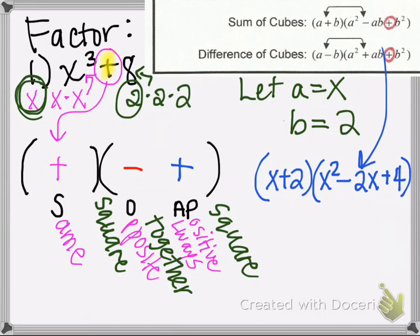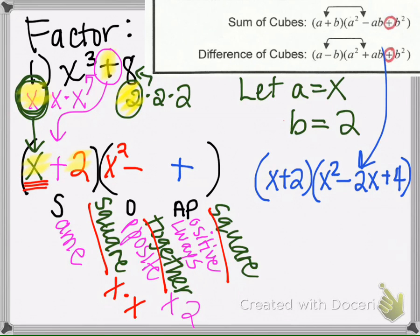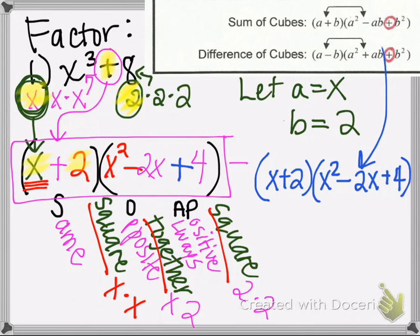The next thing that helps us remember the terms, I say to myself: square, together, square. What goes in the first parentheses is the x, so that goes there. Since two times two times two gets us eight, the two goes there. Then we square the x to get x squared, we put the x and the two together using multiplication to make two x, and then we square the two to get four. This mnemonic will help us get the same answer as plugging values into the formula.